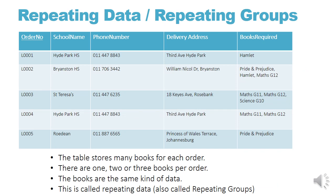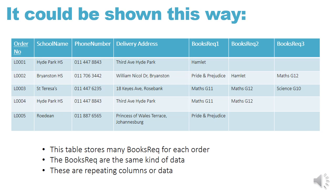A definition you also need to know is repeating data, also called repeating groups. In our table, we store many books for each order — you could have one, two or three books per order. The books are the same kind of data, and it's called repeating data or repeating groups because you have more than one bit of data in a column. Sometimes it's also shown by adding more than one column for the books required, with only one book in each column — it's still called repeating groups.